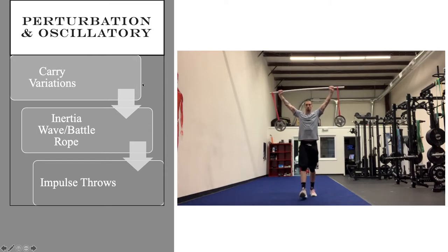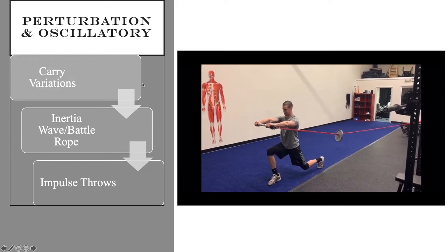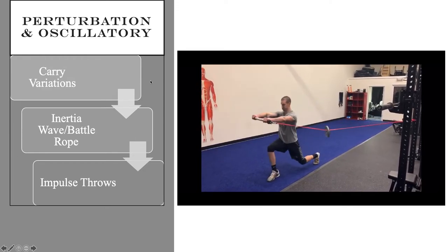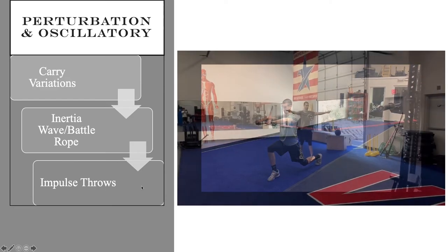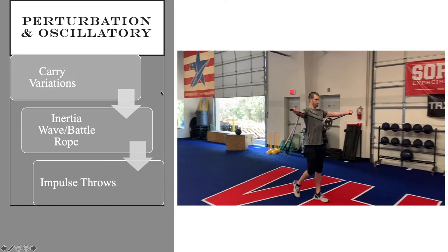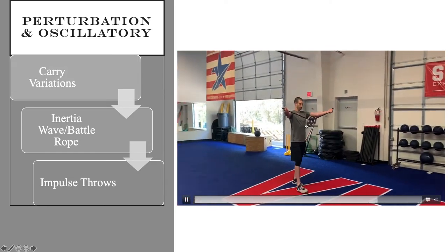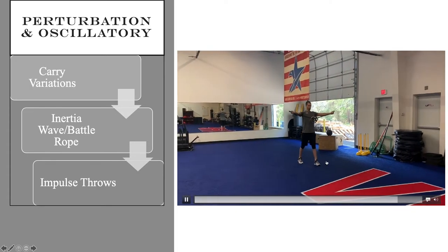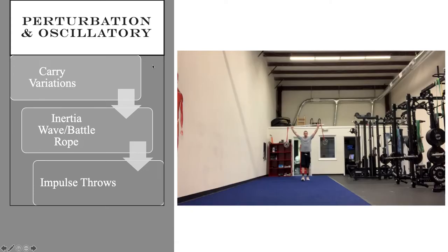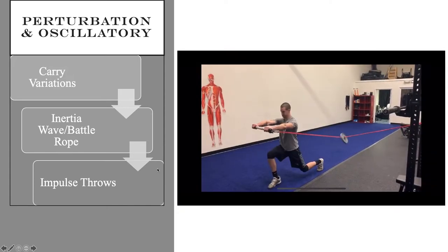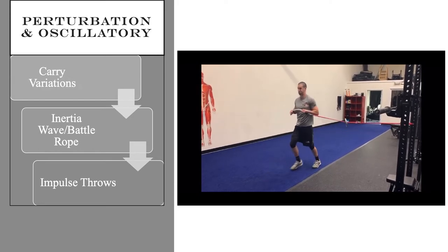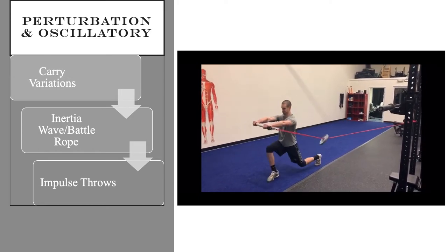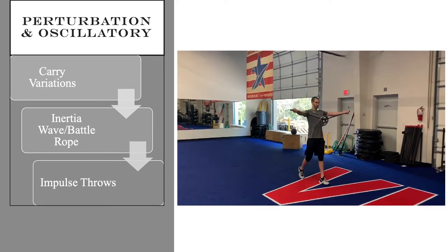Perturbation and oscillation — I'm a huge fan; there's a lot of value here. Carries, inertia wave, battle ropes, any kind of impulse or med ball throw all check the box. We can advance from a front rack carry to something that gives additional perturbation stimulus, challenging locomotion from a neural perspective. I look at the nervous system like a river: the width is our ability to tolerate variability, the depth is fatigue resistance, and the current is speed of transmission or contraction.